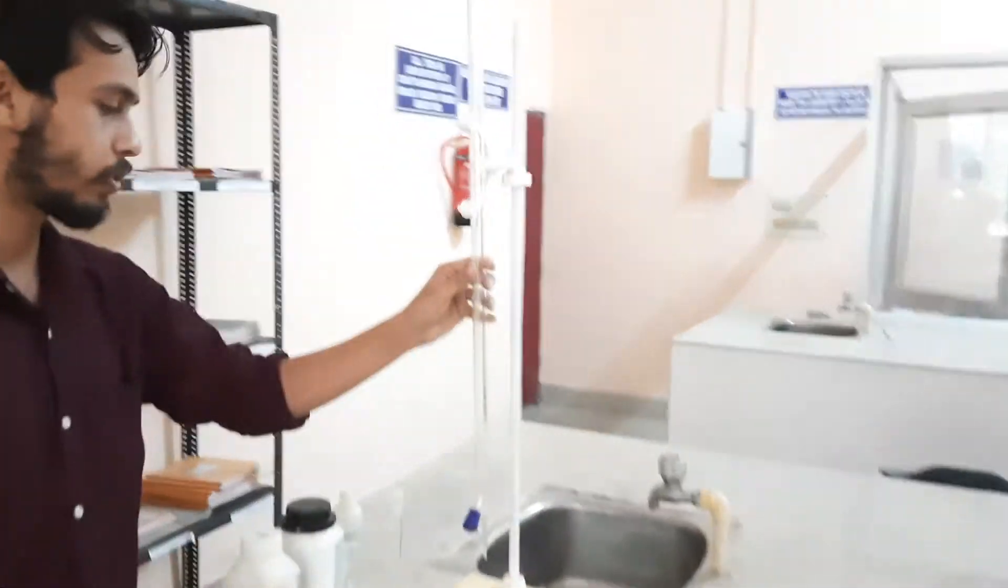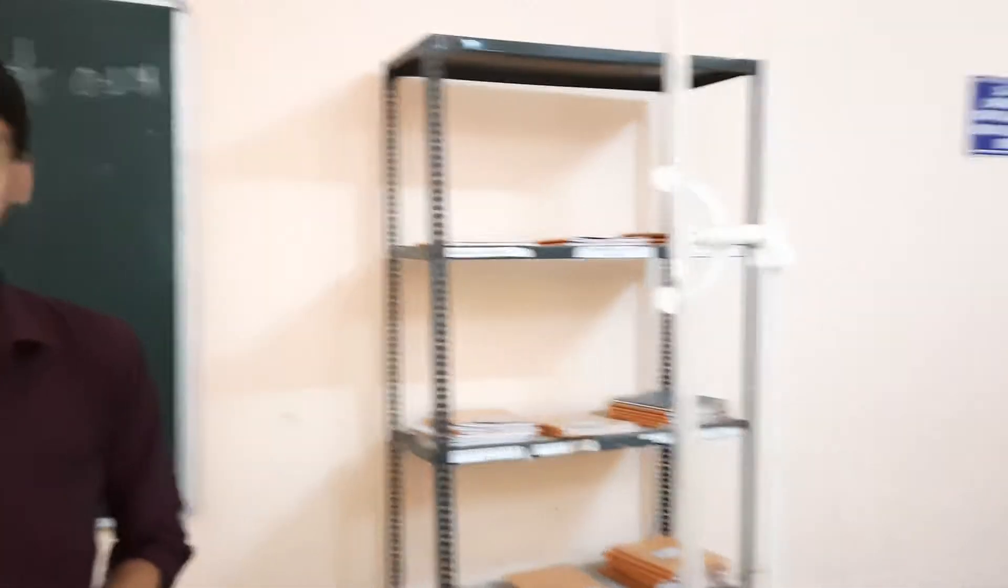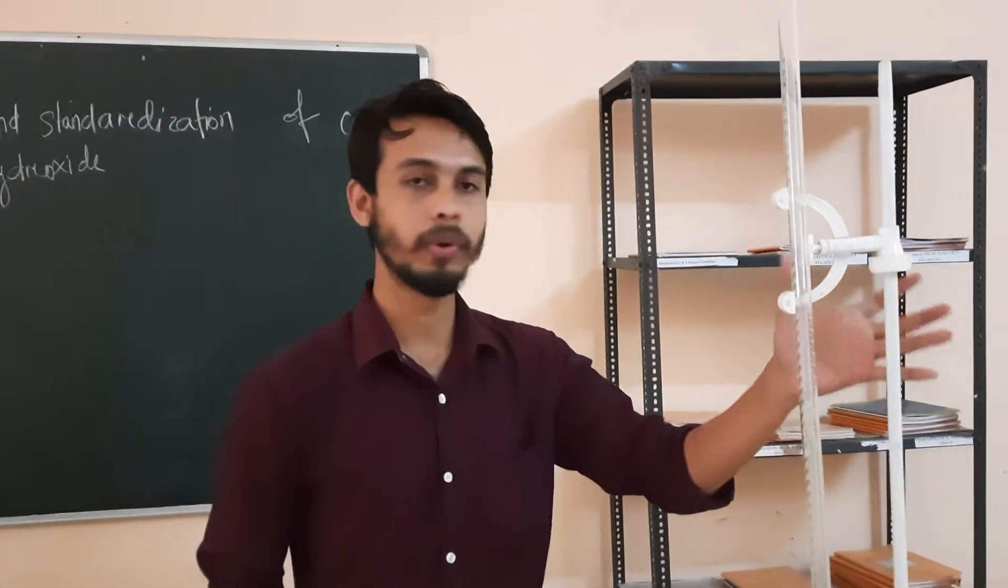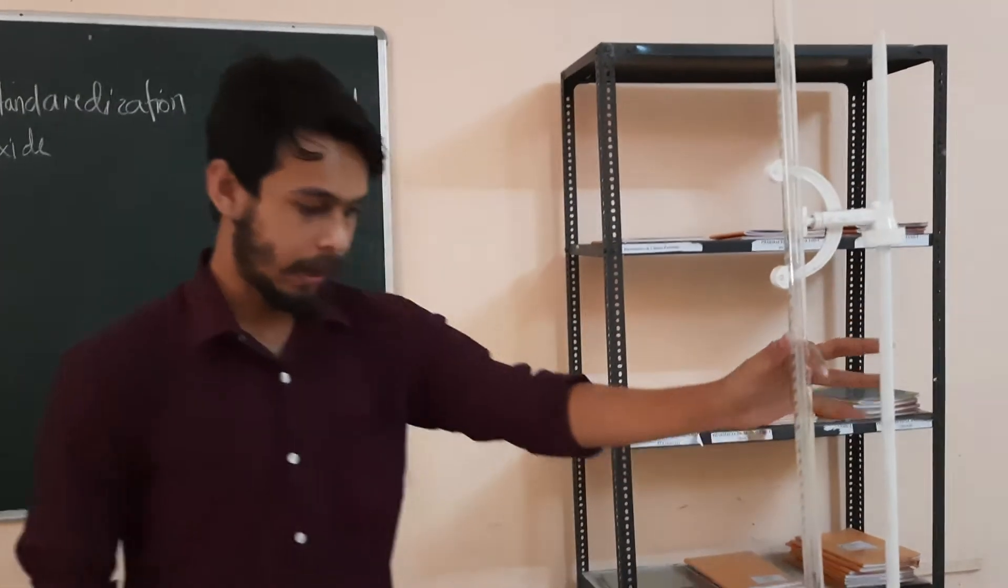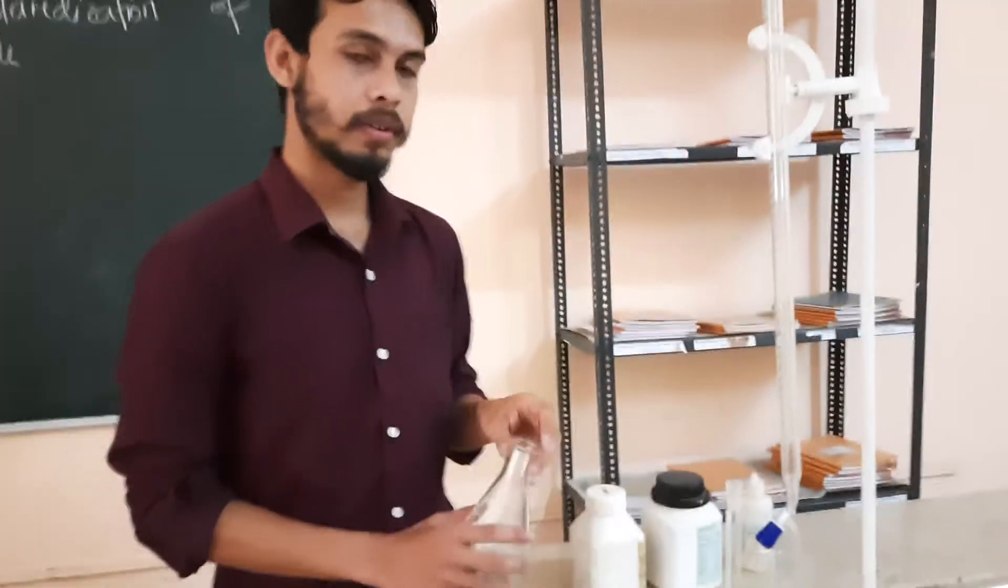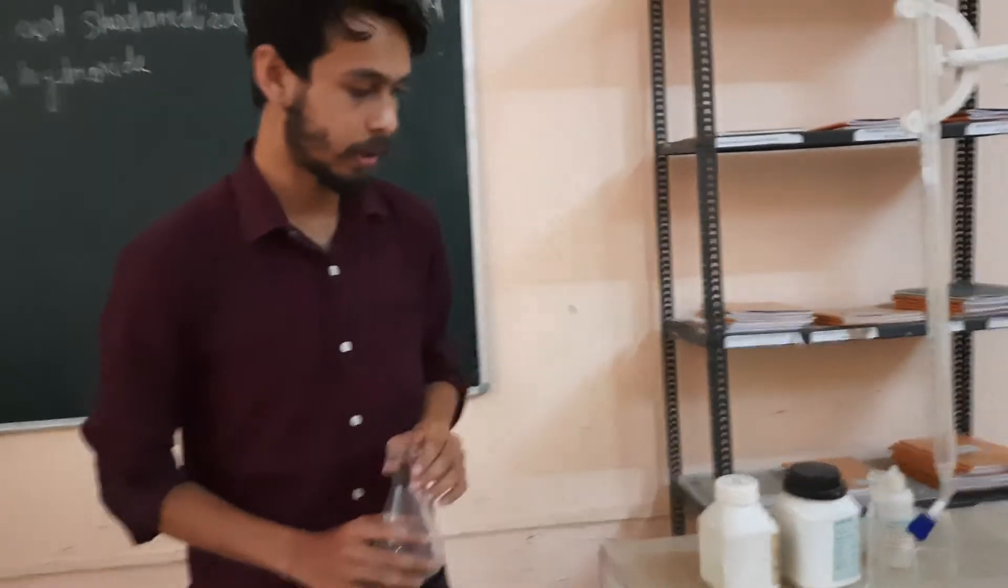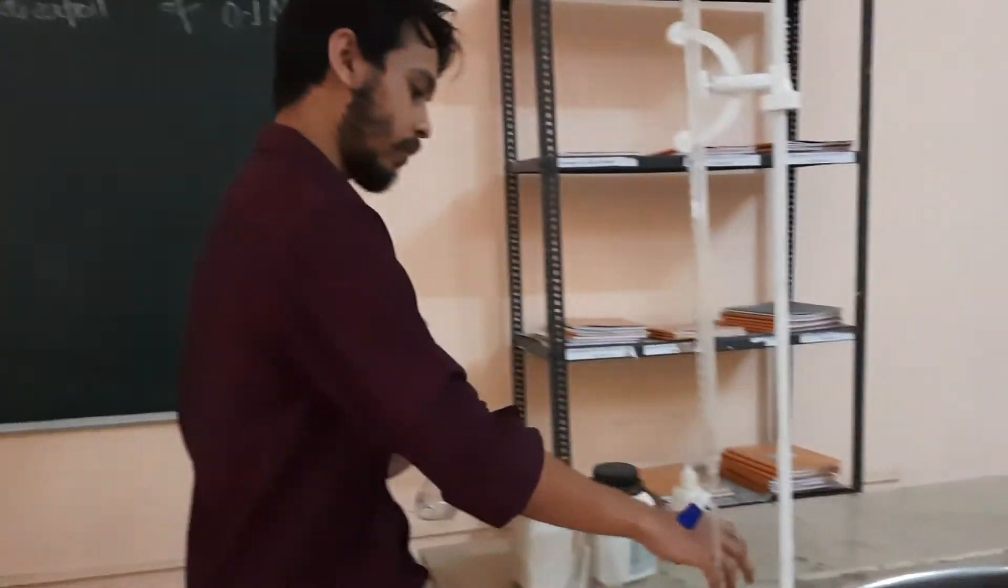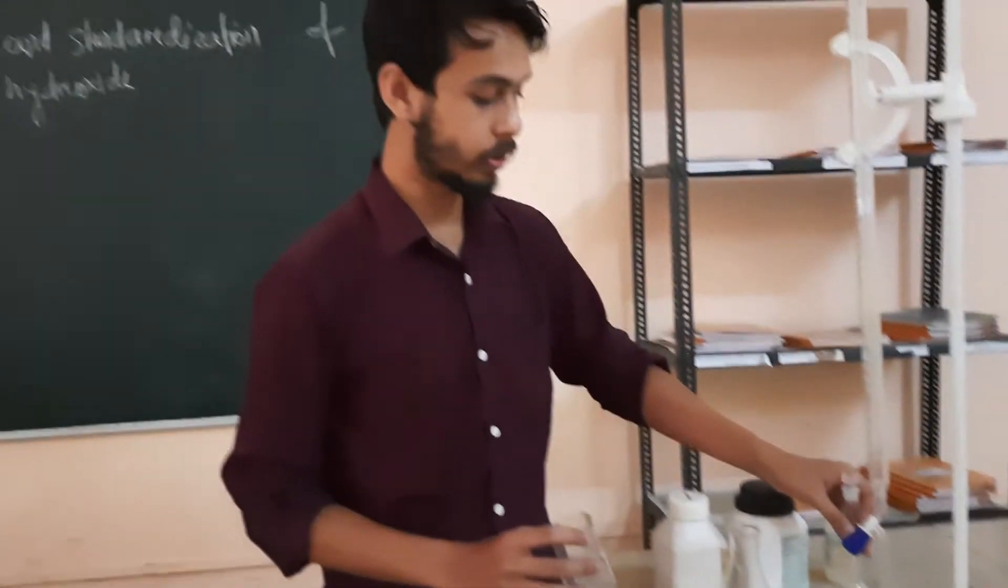This one is burette. All of you know this one is the burette. We are going to perform the titration. So this is the burette. This is the burette stand to hold the burette in a position. And this is the conical flask. We need the conical flask, the volumetric flask, and a beaker for the preparation of the solutions.